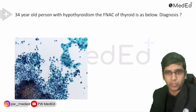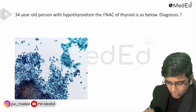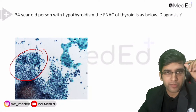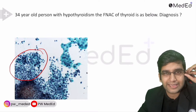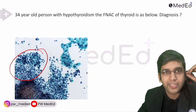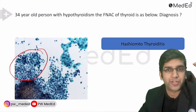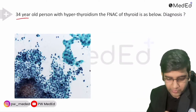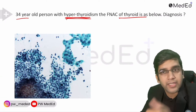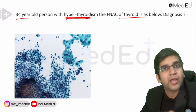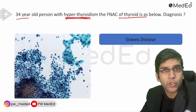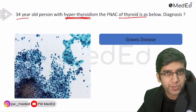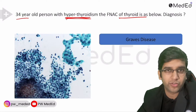34-year-old, hypothyroidism, FNAC shows small round blue cells — lymphocytes. Diagnosis: Hashimoto's thyroiditis. Tweak the history: same patient, hyperthyroidism, FNAC shows the same lymphocytes — diagnosis changes to Graves' disease. Both are autoimmune conditions with lymphocytic infiltration. Small round blue cells with different clinical history give different diagnoses. You're answering without options — just by knowing how a lymphocyte, eosinophil, and neutrophil look.